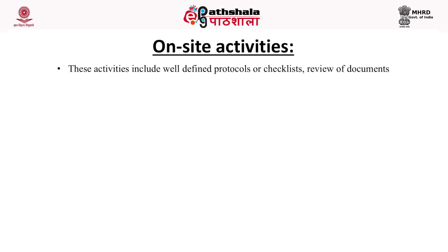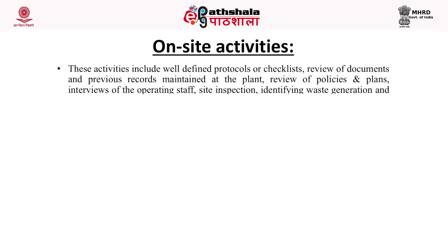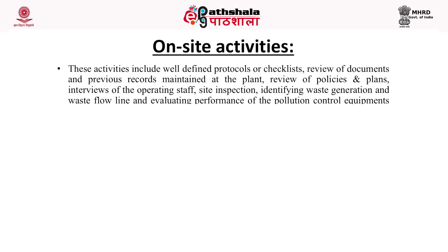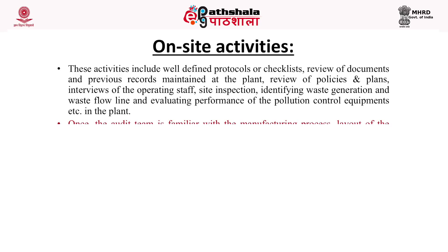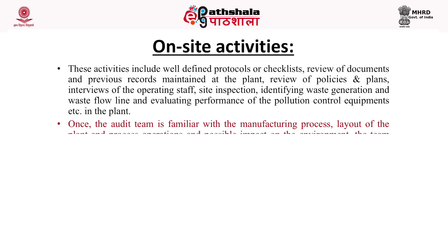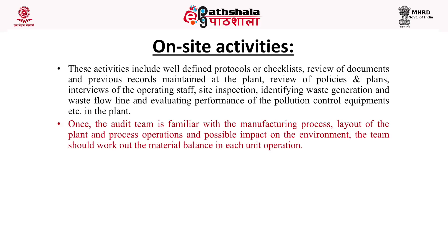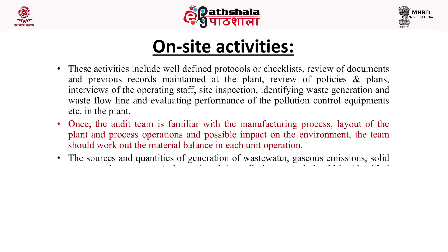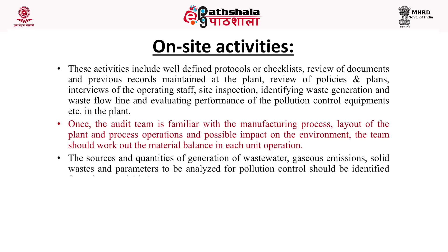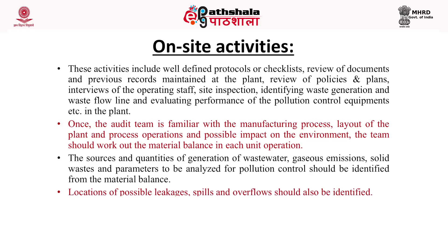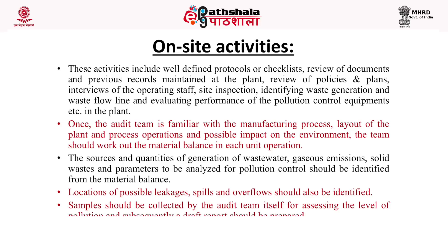The next step is on-site activities. These include well-defined protocols or checklists, review of documents and previous records maintained at the plant, review of policies and plans, interviews of operating staff, site inspection, identifying waste generation and waste flow lines, and evaluating performance of pollution control equipment. Once the audit team is familiar with the manufacturing process, layout of the plant, and possible environmental impact, the team should work out the material balance in each unit operation.